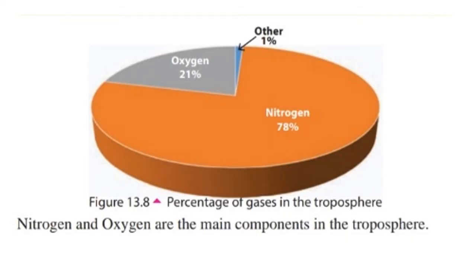This chart showing you the percentage of gases in troposphere. You can see nitrogen has high volume, then oxygen has the high volume in troposphere. Here, nitrogen and oxygen are the main components of troposphere.